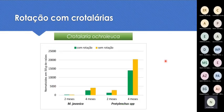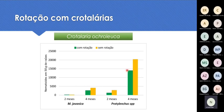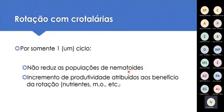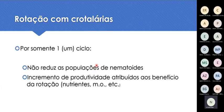Este ensaio foi com Crotalaria juncea e aquele com C. ochroleuca, que o pessoal usa bastante hoje em dia. Com a ochroleuca é um pouquinho diferente: onde se fez a rotação, teve um pouco menos de nematóides do que onde não se fez. Ao que parece, C. ochroleuca tem um efeito nematicida um pouco maior do que a juncea, que não tem nenhum efeito. Mas é um efeito pequeno, pois as populações continuam muito elevadas mesmo onde se fez a rotação. A rotação com crotalária é muito importante porque melhora as condições para a planta, mas não reduz significativamente as populações. A juncea não reduz nada e a ochroleuca reduz um pouco, mas não o suficiente para abrir mão do nematicida.